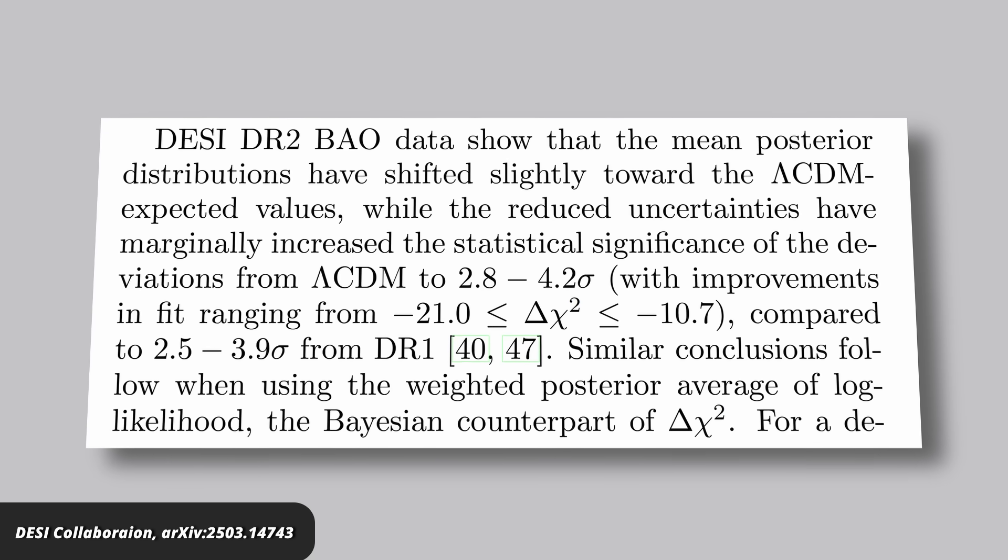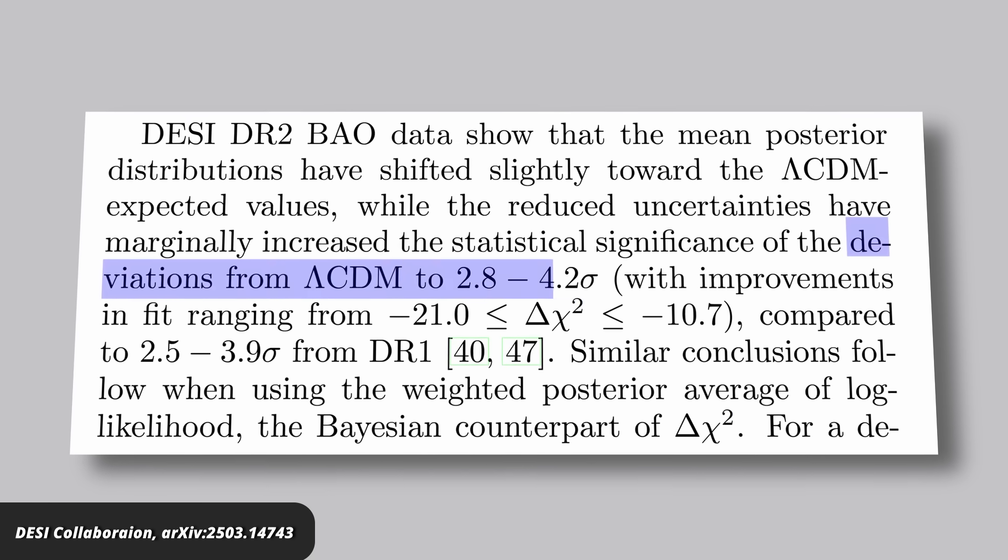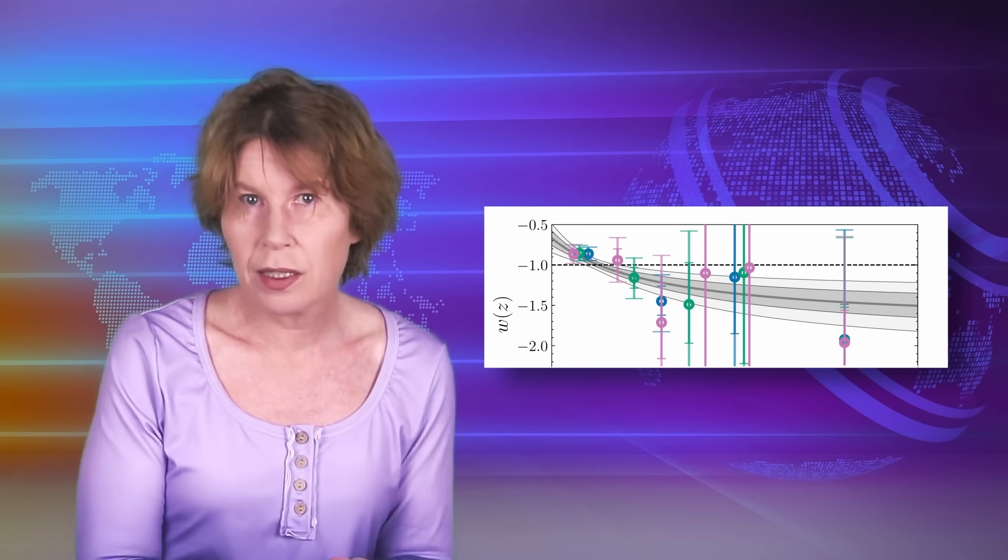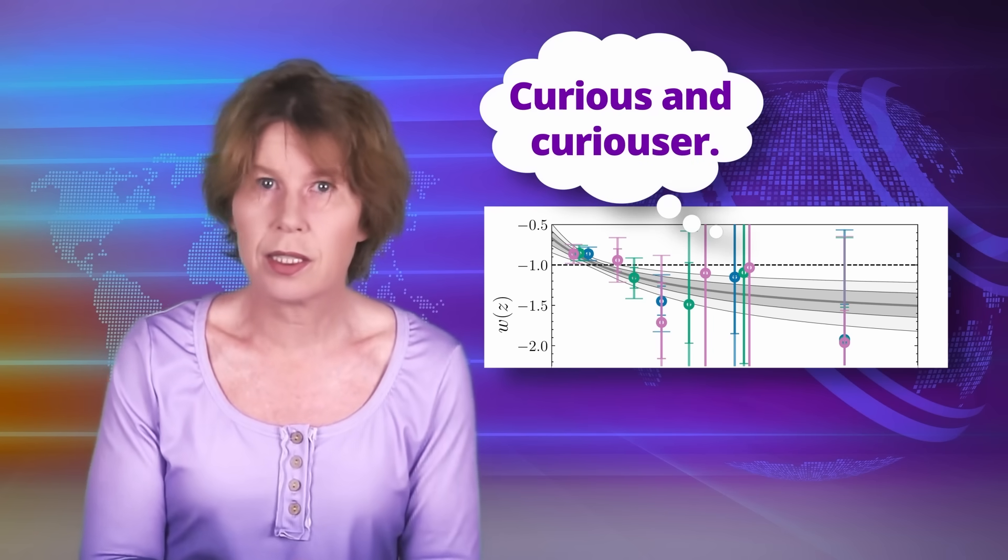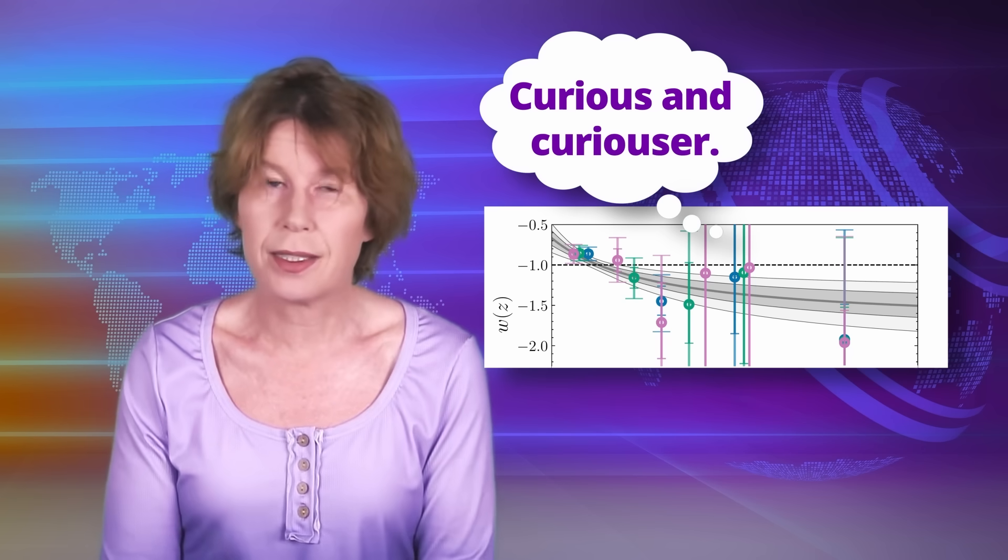Combined with other data from the CMB, supernovae and weak lensing the evidence for this is now at 4.2 sigma depending on how you look at it. Not quite well done yet, but definitely curious. So it looks like the universe had phantom energy in the past but no longer has. What does it mean?